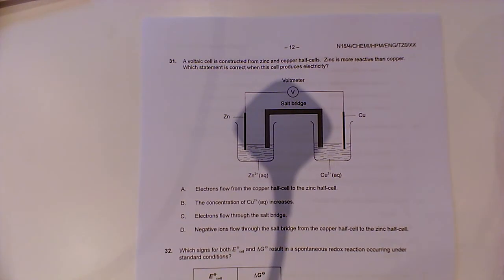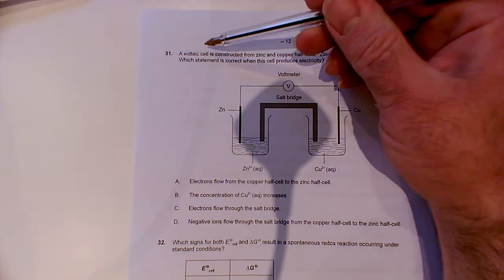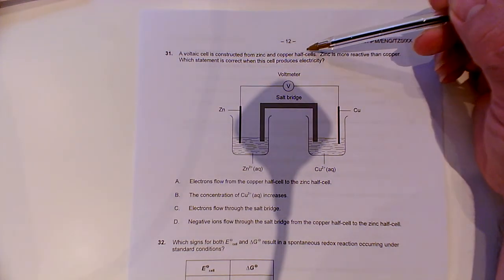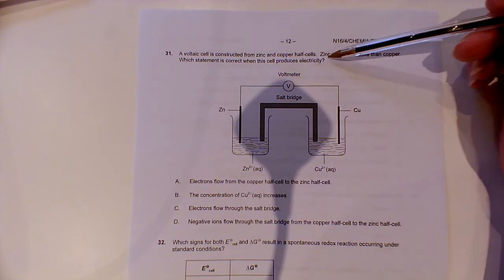I'll try and go for this one a bit quicker then, folks, because I realized the last video ended up being quite long. A voltaic cell is constructed from zinc and copper half-cells. Zinc is more reactive than copper. Which statement is correct when this cell produces electricity?